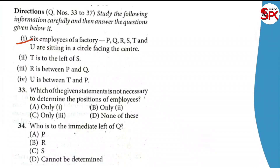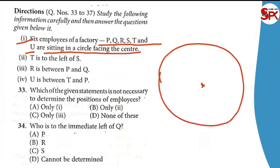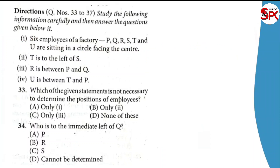Six employees of a factory. The names are P, Q, R, S, T and U. The circle is a place and the center is a place — the circle is a place. So next, there is a hint. If you follow the hint, we will take the hint. We will tell you the left of S. So here, we will find out. The point is a place, the center is a place.